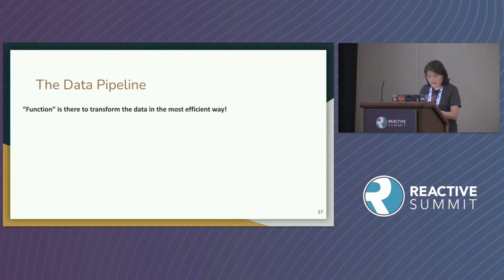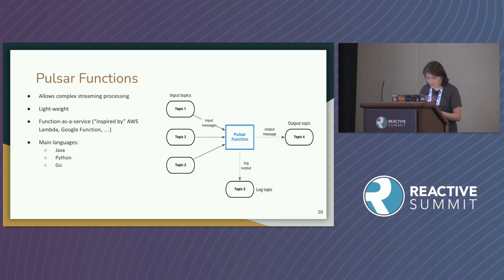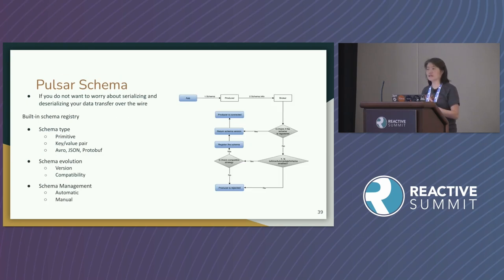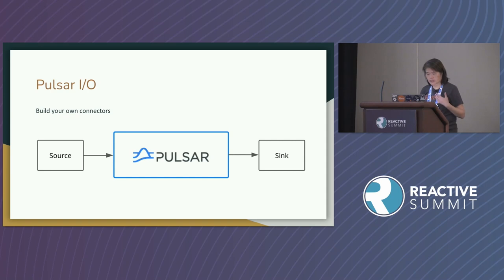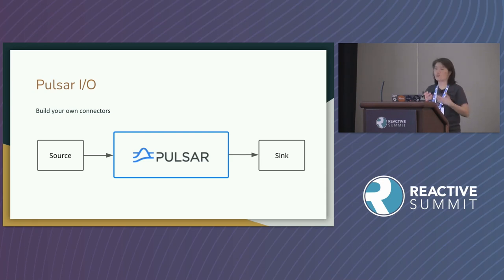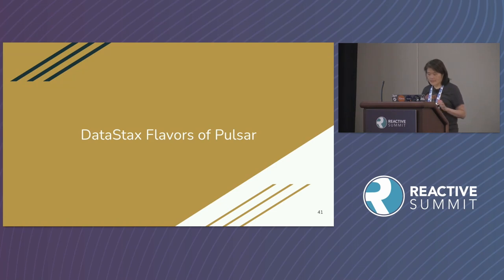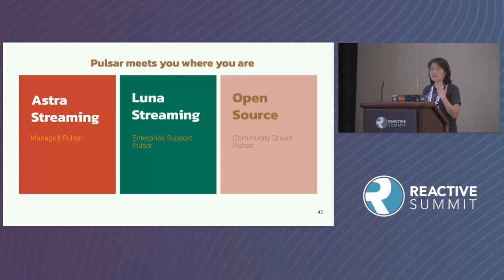Pulsar Functions takes on the spirit of AWS Lambda — lightweight, allowing message transformation as data travels through the pipeline. Pulsar Schema lets you define your data without worrying about serialization and deserialization, and it tracks schema changes. Pulsar IO is an SDK — you can write your own source or sink connectors if they aren't pre-configured; Elasticsearch is already a pre-configured sink. DataStax has Astra Streaming, which is managed Pulsar in the cloud, and Lunar Streaming for self-deployed enterprise support, or you can use it completely open source.